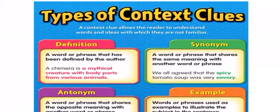Context clues can be definitions: a word or phrase that has been defined by the author. A chimera is a mystical creature with body parts from various animals.